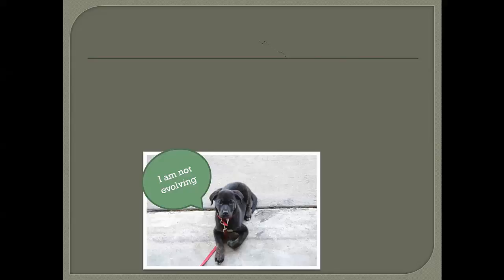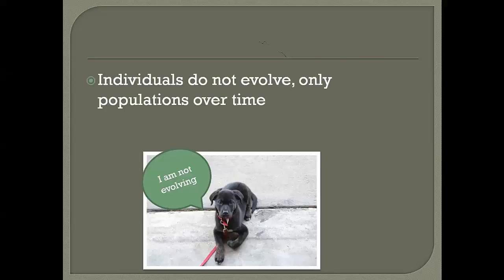The first thing to point out is that individual organisms do not evolve. Populations evolve over time, but an individual — like my dog Dexter here when he was a puppy — cannot evolve. Once you are born, you have the same genes that you'll have when you die. You don't evolve new traits throughout your lifetime.